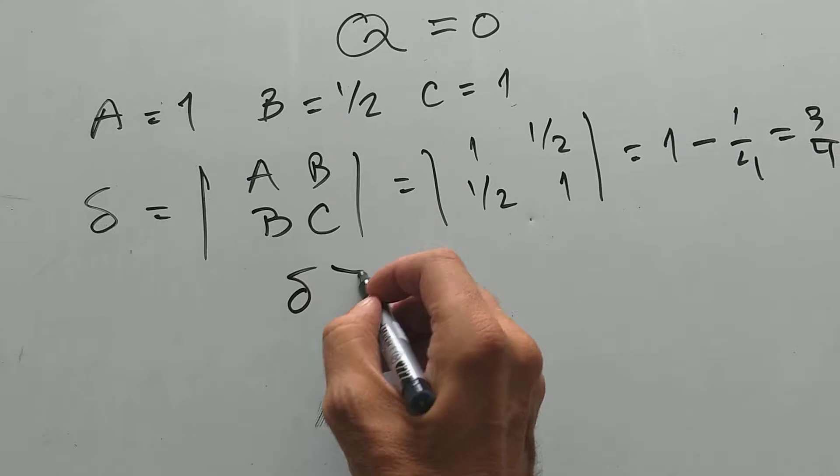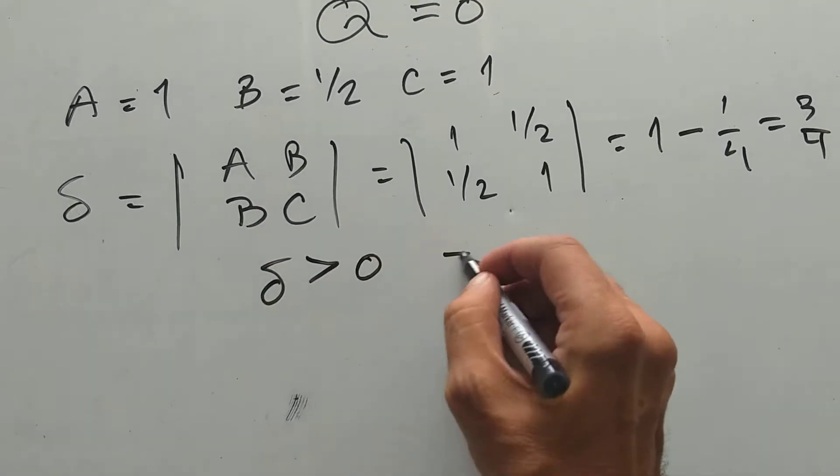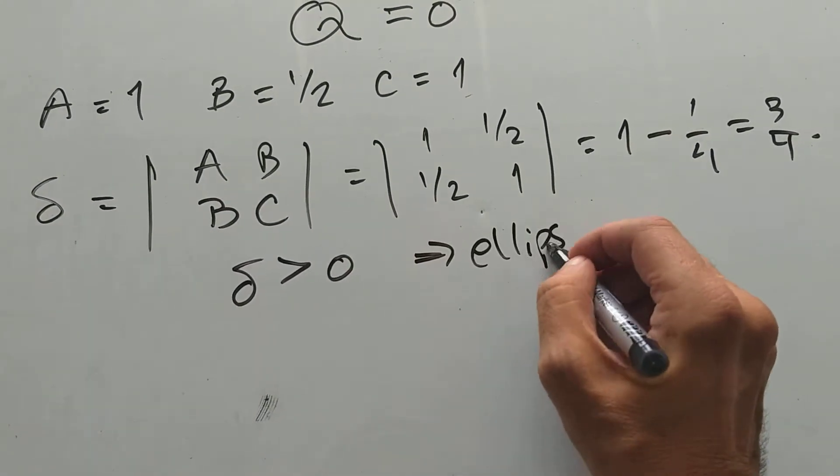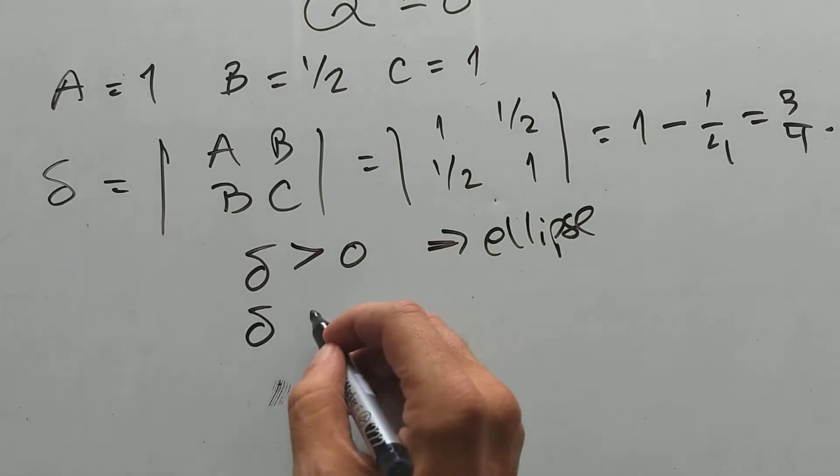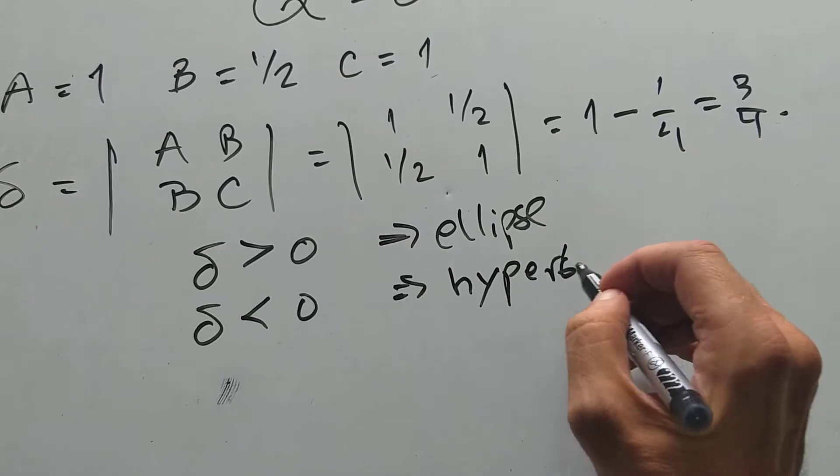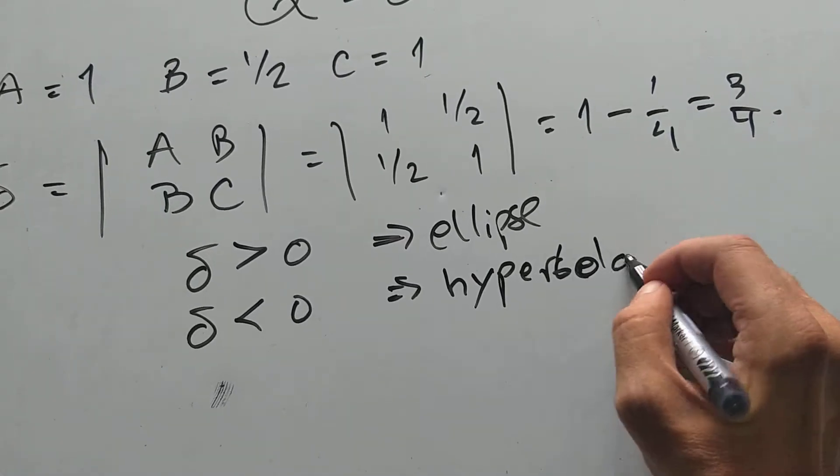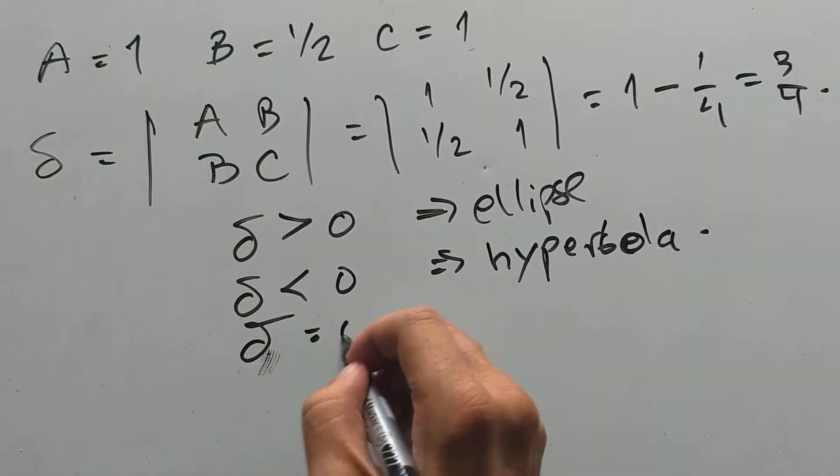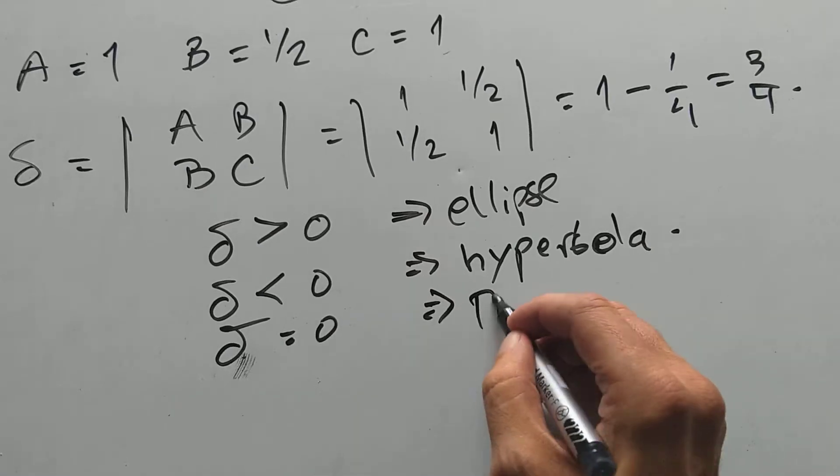Now, if delta bigger than 0, then we have ellipse or circle, maybe. If delta less than 0, we have hyperbola. And if delta equals 0, we have parabola.